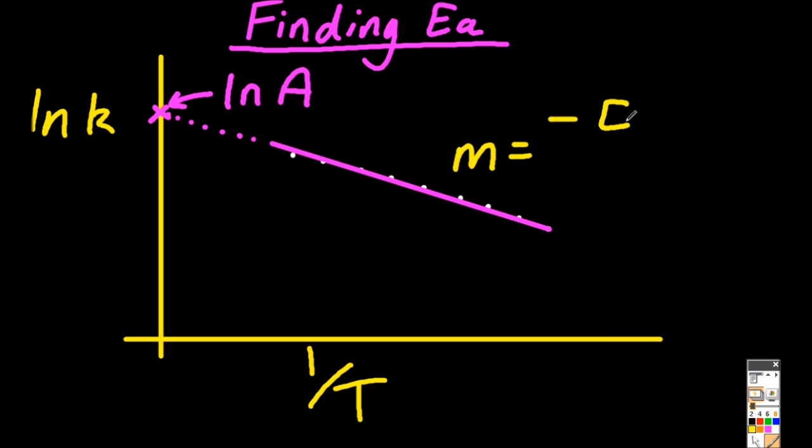And the gradient of this line is negative activation energy over the gas constant R. And just to remind you, the gradient is rise vertical over run, which is the horizontal. Easy.